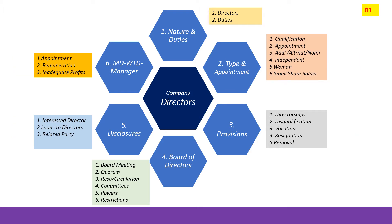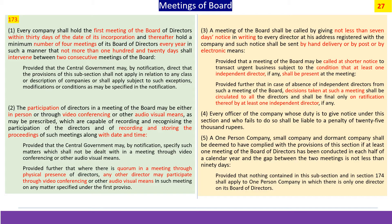Now we will look at the board of directors and its various provisions on quorum, committees, powers and restrictions. Provisions on meetings of board are contained in section 173. It talks of the first meeting of the board to be held within 30 days of incorporation. Thereafter the requirement is that every year you should hold four meetings, and between two meetings the distance should not be more than 120 days.